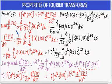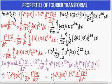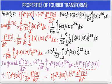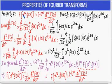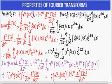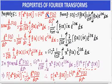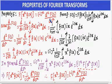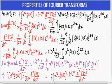In this video, we shall discuss Property 5 of the Fourier transform. It states that the Fourier transform of x^n · f(x) equals (-i)^n · d^n F(s) / ds^n. This is the nth differentiation of F(s).